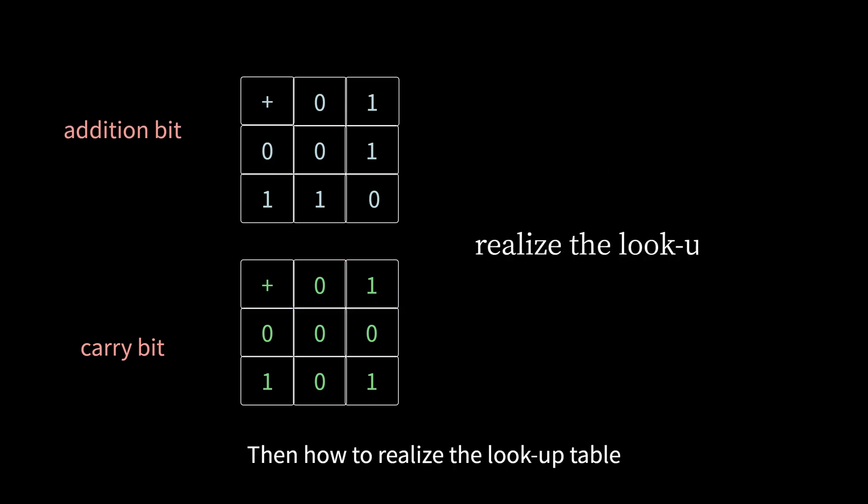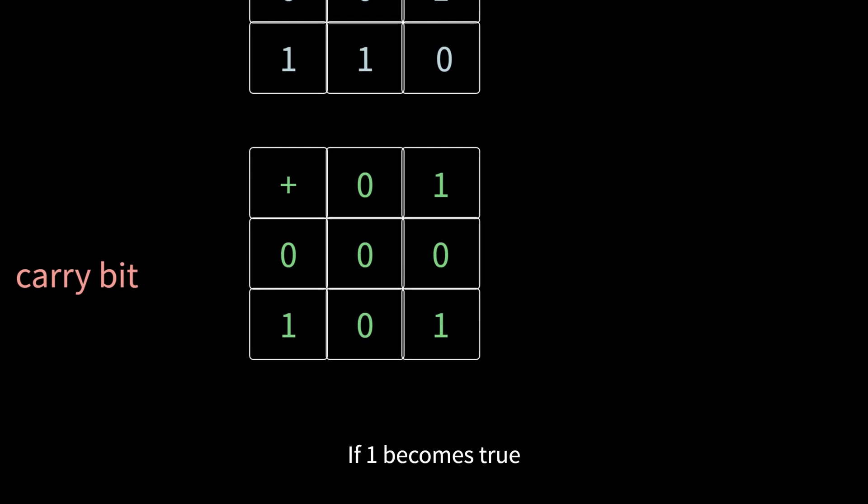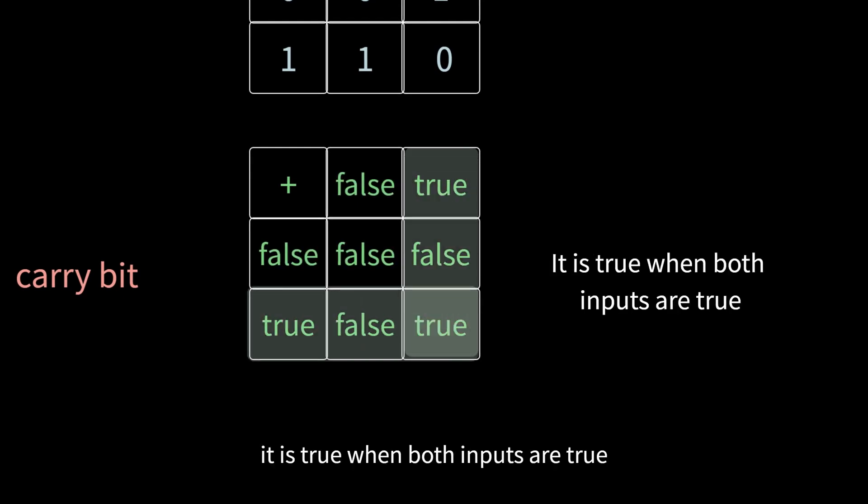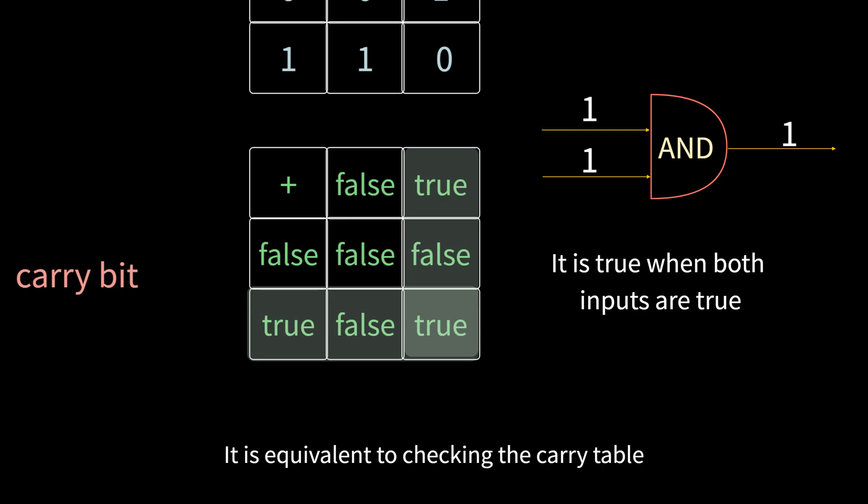Then, how to realize the lookup table? The first is the carry table. If one becomes true, zero becomes false. That is, it is true when both inputs are true. This equals the AND gate in the logic gate. For example, if we input 0 and 1, the output is 0. If there are two 1 inputs, then the output is 1. It is equivalent to checking the carry table.